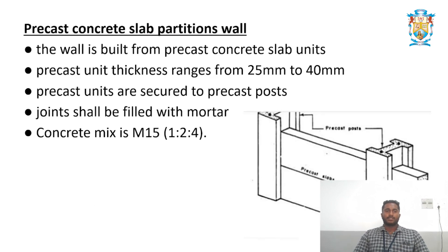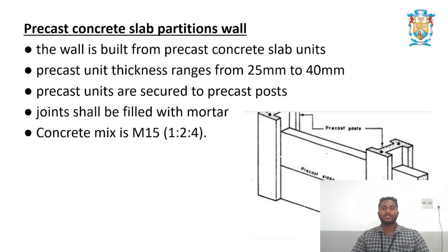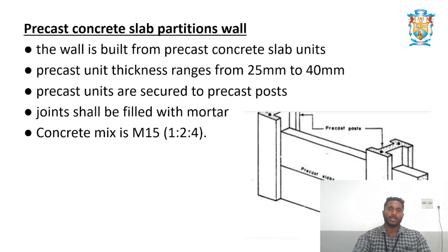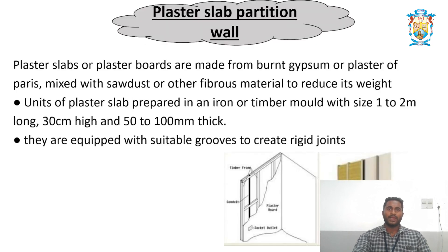For precast concrete slab partition walls, the wall is built from precast concrete slab units with thickness ranging from 25 mm to 40 mm. Precast units are manufactured at a factory or yard and brought to the site. They are secured to precast posts and joints are fixed with mortar. The concrete mix used is M15, which is a ratio of 1:2:4.